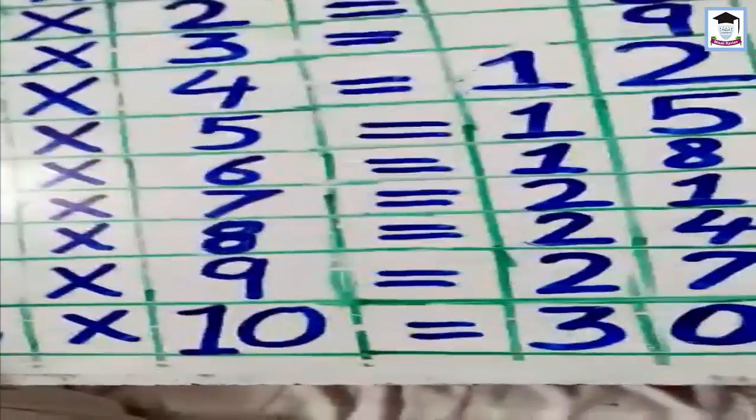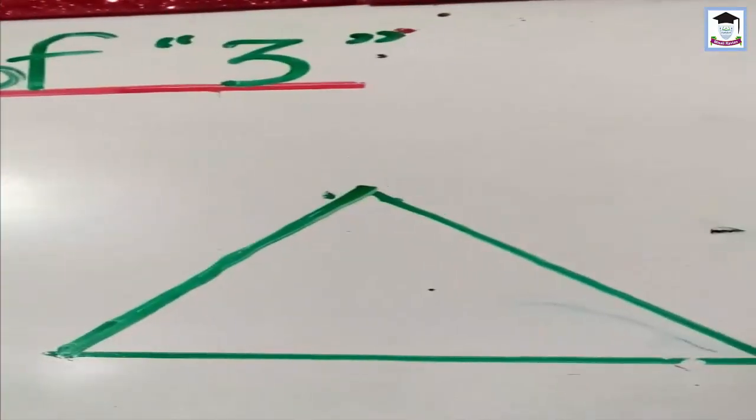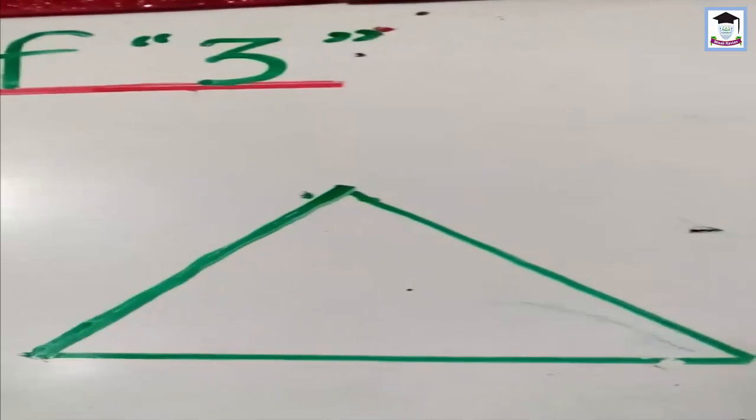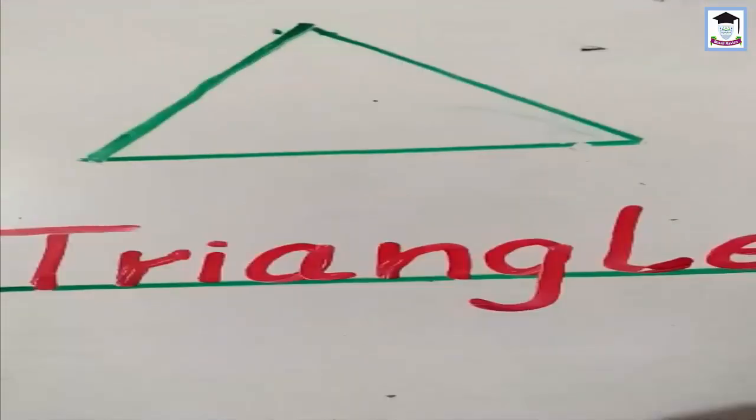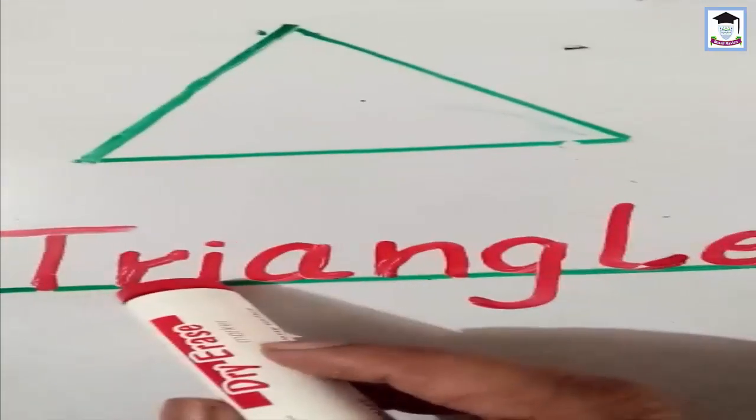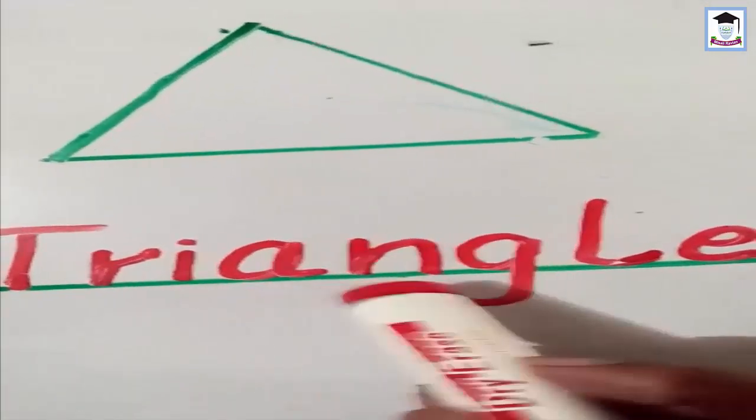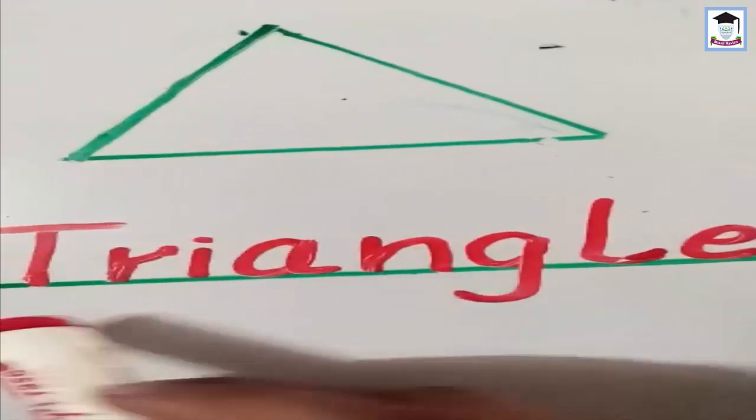Students, we have already learned many shapes. This one is triangle. Triangle spelling is T-R-I-A-N-G-L-E, triangle.